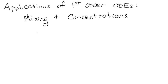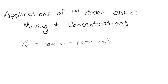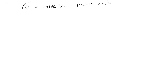The idea of first-order ODEs mixing and concentration is that you have this rate of change — it's kind of like the ultimate rate of change problem. Any time you have a rate of change, you'll always have a rate in minus a rate out, and you just have to figure out what goes in there, and then solve the resulting differential equation, which is kind of super amazing. So let's say we have this problem.